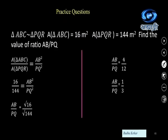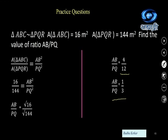Triangle ABC is similar to triangle PQR. Area of triangle ABC is 16 square meters and area of triangle PQR is 144 square meters. Find AB upon PQ. Using the theorem: 16 upon 144 equals AB square upon PQ square. Taking square roots: AB upon PQ equals root 16 upon root 144 equals 4 upon 12, which simplifies to 1 upon 3.